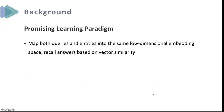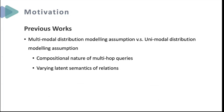Since real-world knowledge graphs are usually incomplete and noisy, a promising approach to answering logical queries is to map queries and entities into the same embedding space and recall answers based on vector similarity search. Research along this line suggests that using multimodal distribution to represent answer entities is more suitable than unimodal distribution, as a single query may contain multiple disjoint answer subsets due to the compositional nature of multi-hop queries and varying latent semantics of relations, while a broad single-modal assumption would limit expressiveness and include many false positives in a single large region.